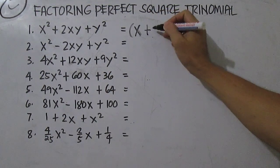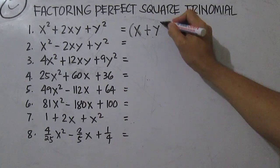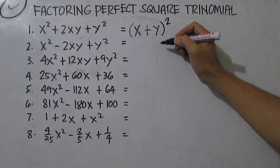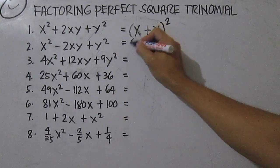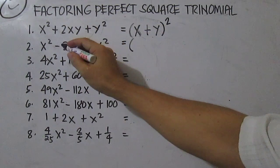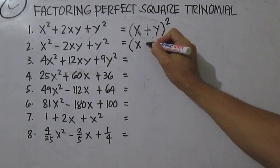Plus the square root of y squared is y, then you square it. For number two, take note that we have a minus sign here, so you have x minus.